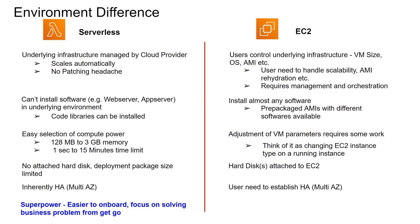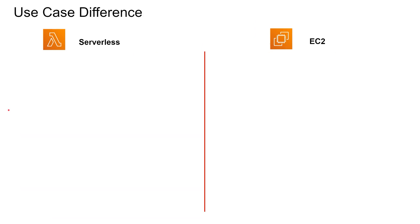One of the superpowers of Lambda is that since you don't have to manage any server, and it's inherently scalable and highly available, it is much easier to onboard, and you can focus on solving the business problem rather than doing maintenance and orchestration. One of the superpowers of EC2 is that you have complete control of the environment, with a rich ecosystem of different AMIs with different pre-packaged software — you can literally run anything on EC2.